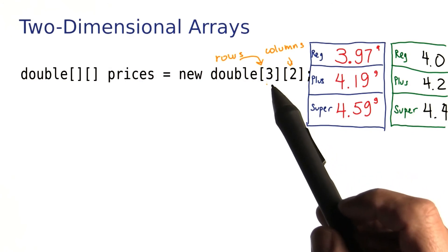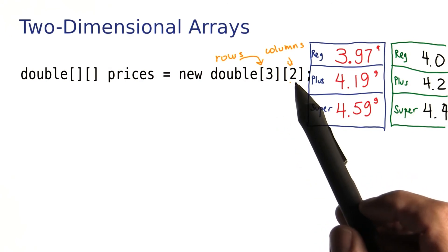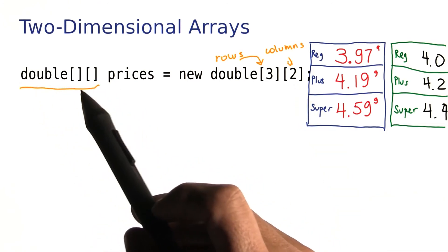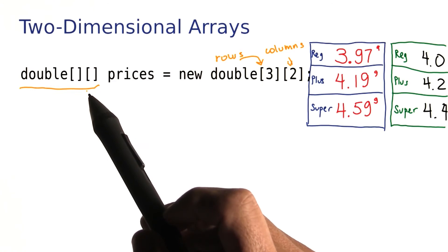In general, the first number is the number of rows, the second one the number of columns. Note the type. It's a double brackets brackets, meaning it's a two-dimensional array of numbers.